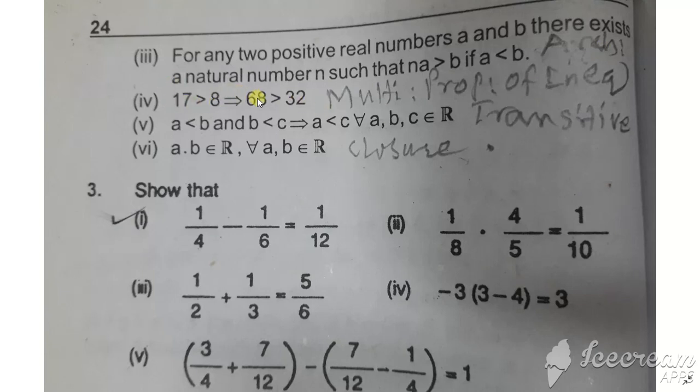Part iv: This property is the multiplicative property of inequality. Inequality means not equal. If A is less than B and C is in R, then when you multiply both sides by C, the inequality is preserved if C is positive. If A is less than B and we multiply by a positive number, then A times C is less than B times C.